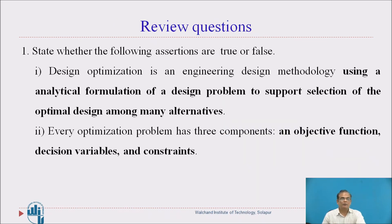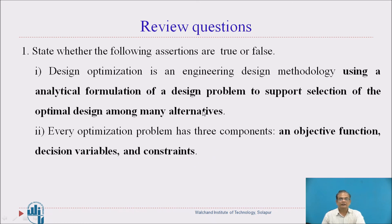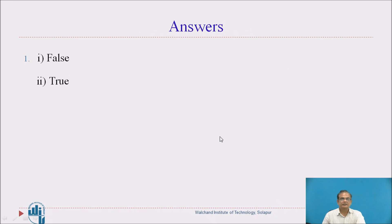Dear students, let us stop here. Here are a few questions for you. State whether the following assertions are true or false. First: Design optimization is an engineering design methodology using the analytical formulation of a design problem to support selection of the optimal design among many alternatives. Second: Every optimization problem has three components — an objective function, decision variables, and constraints. Check whether these assertions are true or false. The answers are: assertion one is false — the correct term is mathematical formulation, not analytical formulation — and assertion two is true.